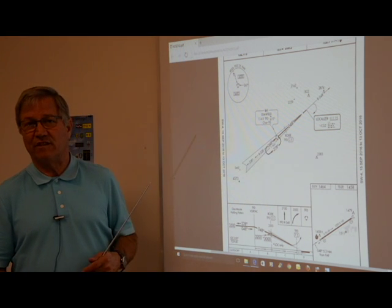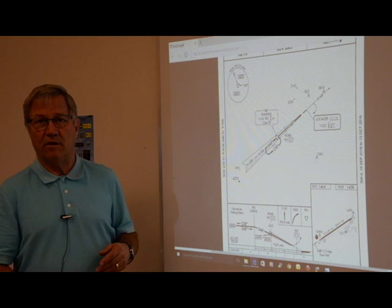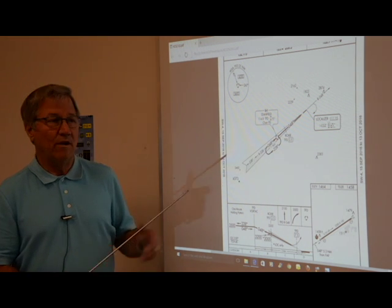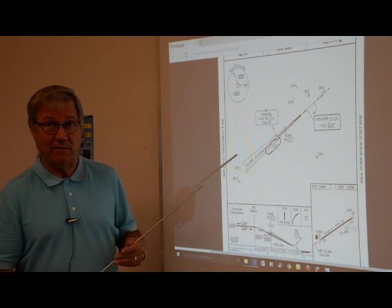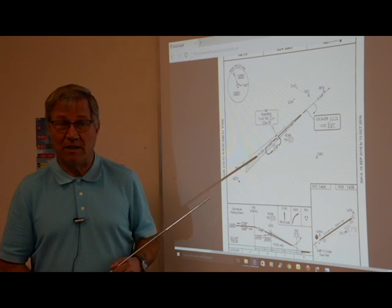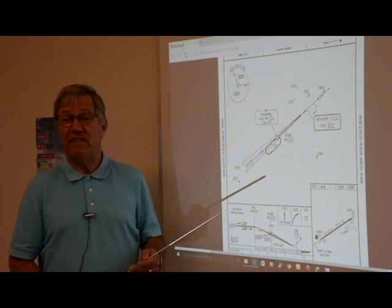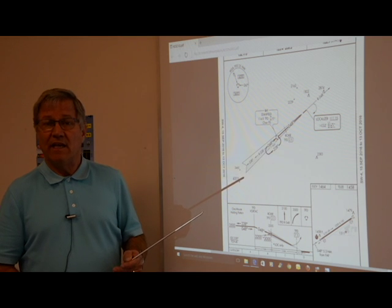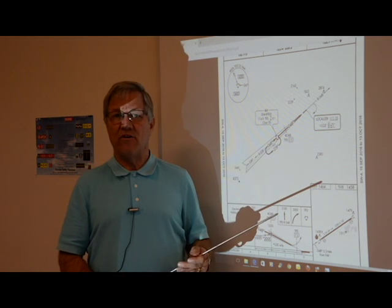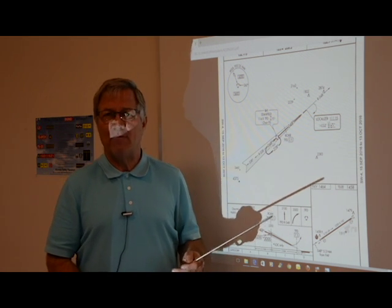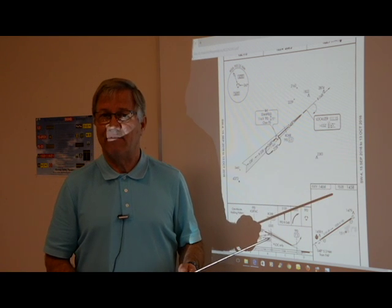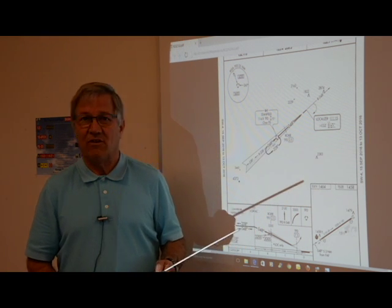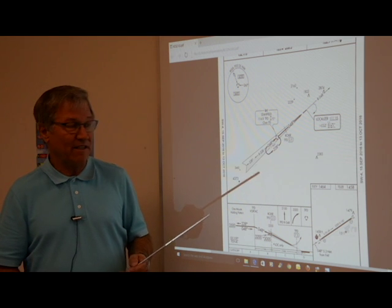That's full scale deflection of the glide slope above or below the center line. If we're looking for half scale deflection to be our target maximum that we want to be off, then we're talking 70 feet at 2 miles. And at 1 mile, we're talking 35 feet. And at a half a mile, when we break out, that's 17 and a half feet.